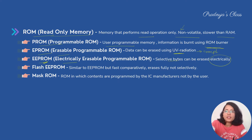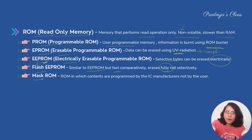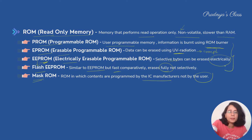The next one is Flash EEPROM — a variation of EEPROM. It is similar to EEPROM but faster comparatively, because it erases the full data at once rather than selectively. The last variation of ROM is Mask ROM. In Mask ROM, the information is written by the IC manufacturer, not by the user. All the other variations were user-programmable memory.